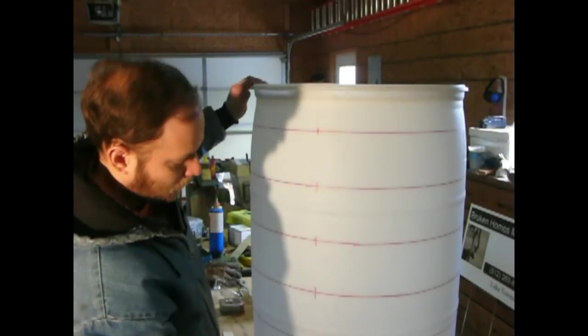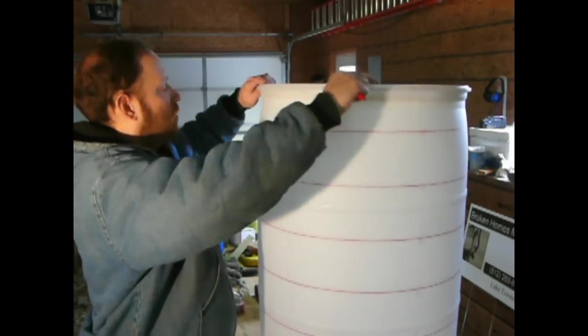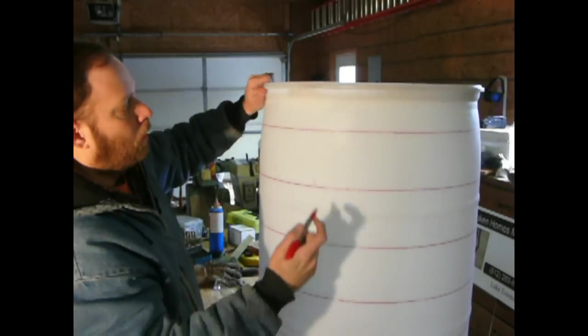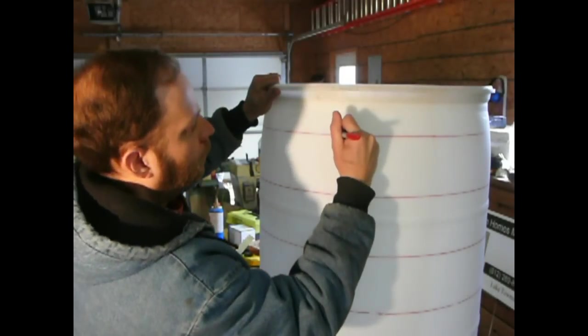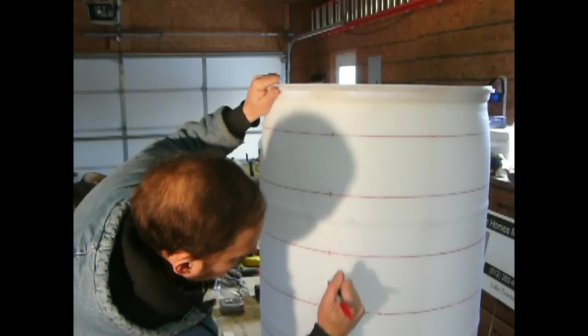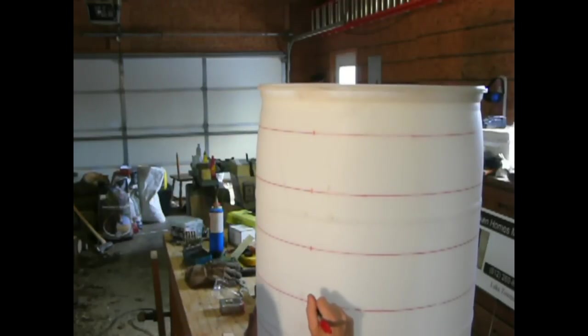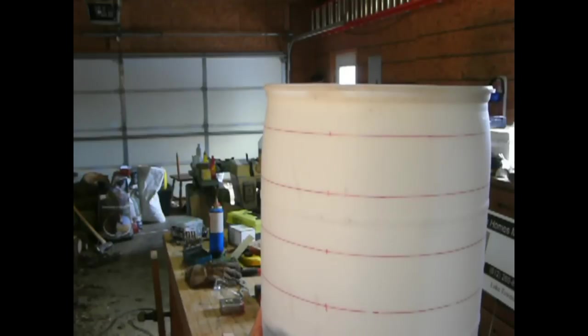I've got the center marked on here because that's where the seam was on the barrel. I can turn this around, and on this side, I see the seam here. I see it here. I see it here. A little bit of shadow here. I see it there. A little bit of shadow. There it is. And right there.